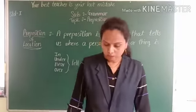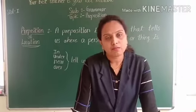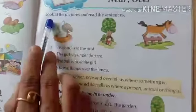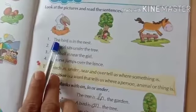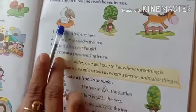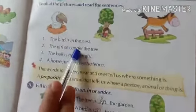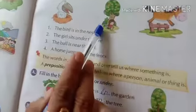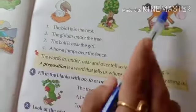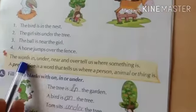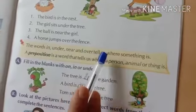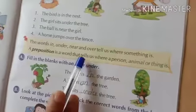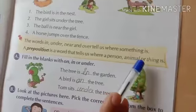Now open your textbook on page number 57 for more examples. In, on, under, near, over — look at the pictures and read the sentences. The bird is in the nest. The girl sits under the tree. The ball is near the girl. A horse jumps over the fence. The words in, under, near, and over tell us where something is.